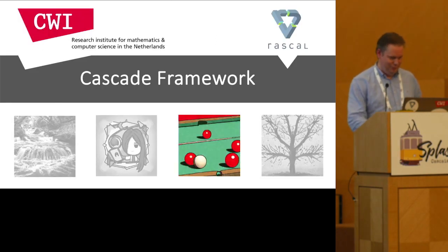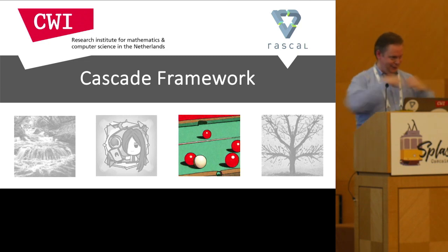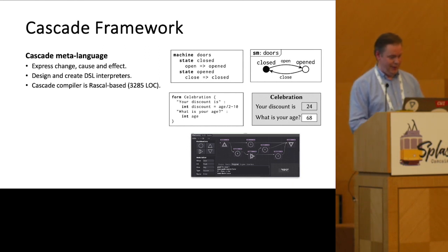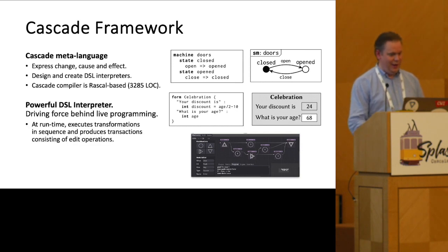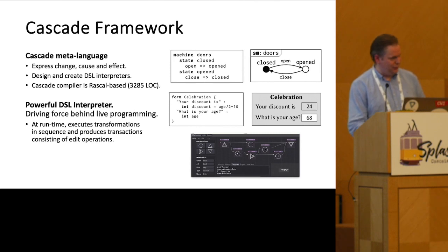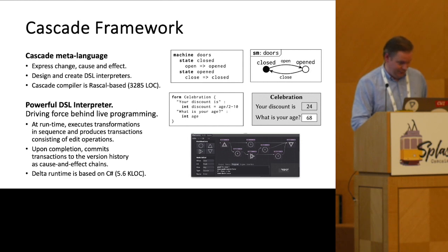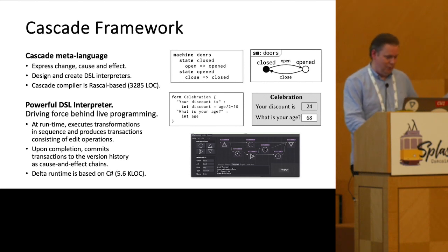Let's talk about the framework, called Cascade. I put snooker balls on the table to illustrate the idea that these effects cause each other. Cascade is a meta-language that expresses change, cause, and effect; it's intended for the design of DSL interpreters. It's a Rascal program — the compiler is just 300 lines of code. It generates powerful interpreters, the driving force behind live programming. At runtime, these execute transformations in sequence and produce transactions consisting of edit operations. Upon completion, these interpreters commit transactions to the version history as cause-and-effect chains, which facilitate answering why questions.